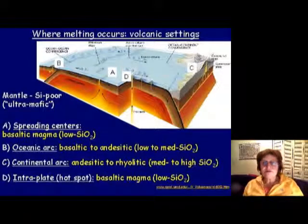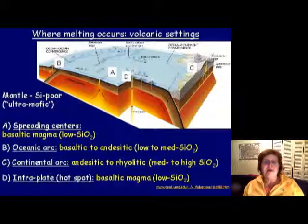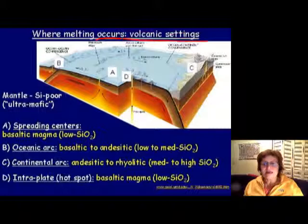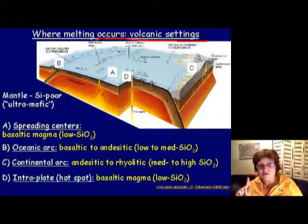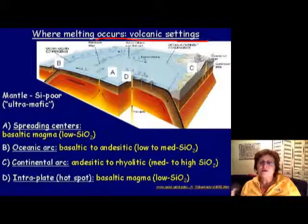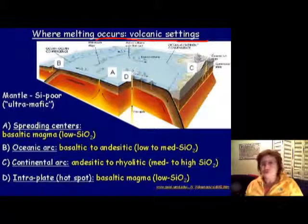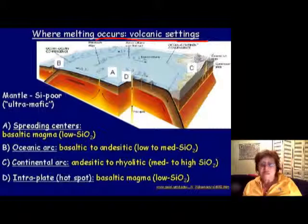This is the fourth and last segment of the volcano chapter. This slide shows the plate tectonic setting and different kinds of volcanoes. At divergent plate boundaries — rifting, mid-oceanic ridges, or hotspot volcanoes — you always get low SiO2, low viscosity, mafic basaltic lava.